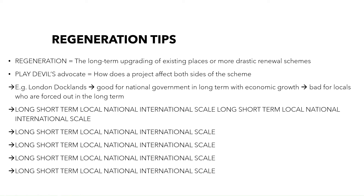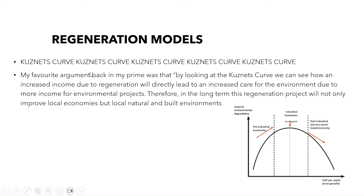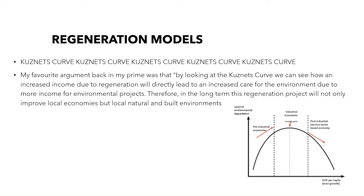Please use the long-term, short-term, local, national, and international scale argument throughout. A very good model you can use for regeneration is the Kuznets curve. By looking at the Kuznets curve, you can see how increased income due to regeneration will directly lead to increased care for the environment due to more income for environmental projects. Therefore, in the long term, this regeneration project will not only improve local economies, but local natural and built environments. It's a very easy way to tick off both the economic and environmental benefits for a regeneration scheme.